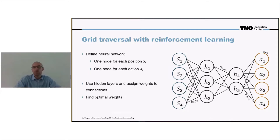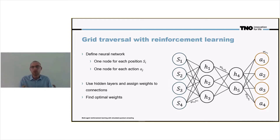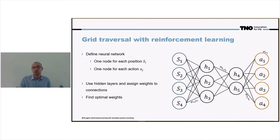The task is to find weights W between all pairs of nodes in order to give your best policy — in order to learn the best policy. The best policy is associated with optimal weights.